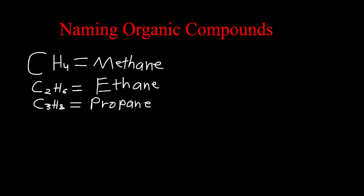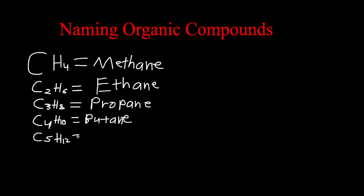Memorizing these words is very important for naming these compounds. If we have four carbons, we would have ten hydrogens — this would be called butane. If we have five carbons, we would have 12 hydrogens — this would be called pentane. If we have six carbons, we would have 14 hydrogens, and this would be called hexane.